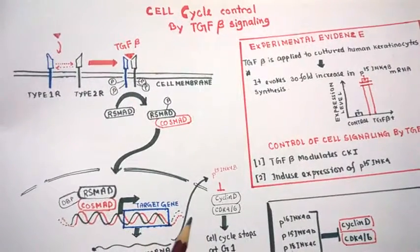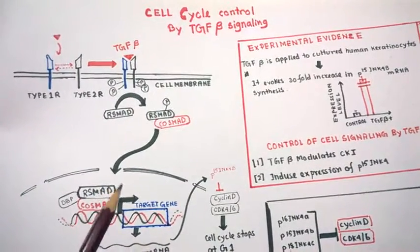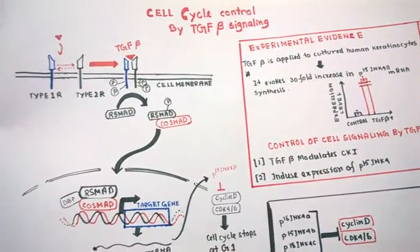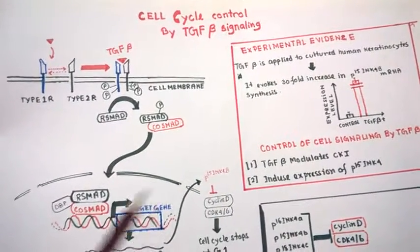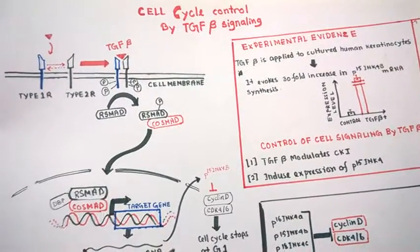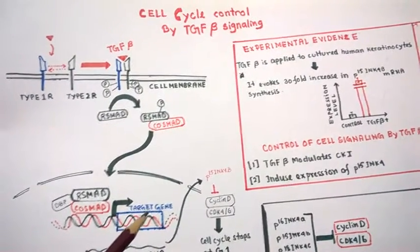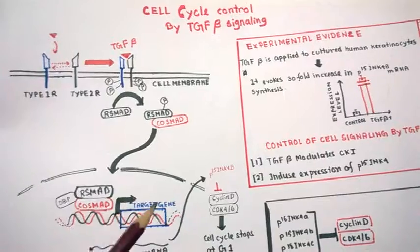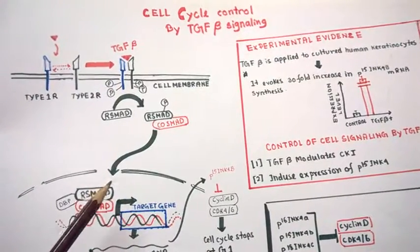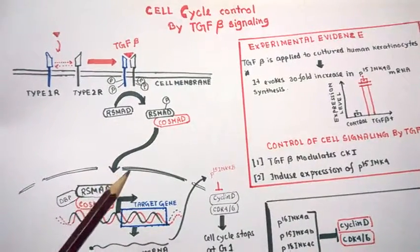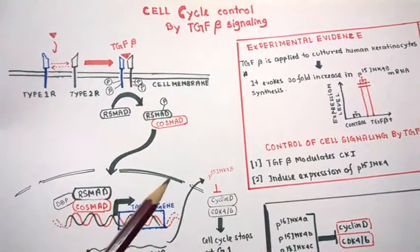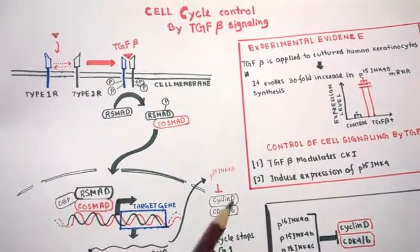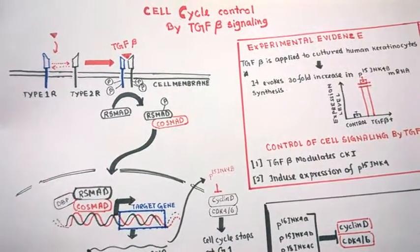It has to be regulated and checked. These TGF beta signaling pathways put a trigger on cell cycle growth and prevent abnormal cell growth and abnormal cell division. That's all.